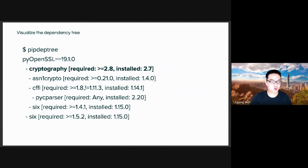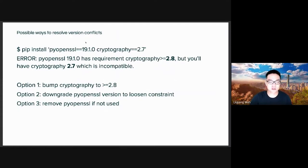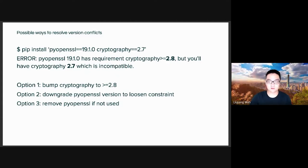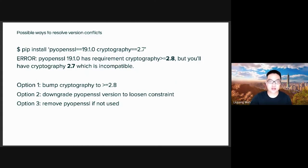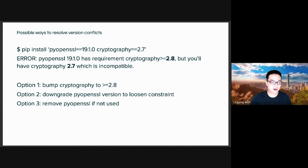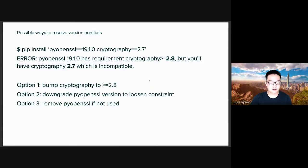Now we know the problems — how can we resolve version conflicts? Looking at the same example, the first option is to bump cryptography to something >= 2.8. The second option is to downgrade pyOpenSSL to loosen the constraint on cryptography — for example downgrade to 18.12.1.0, which may only require cryptography >= 2.7. The last option, maybe a bit extreme, is that if your application doesn't need the library at all, you can just remove it and you won't have a version conflict.